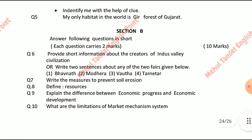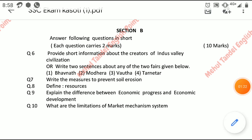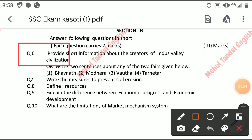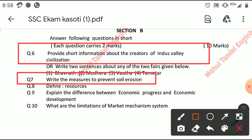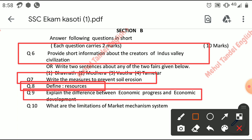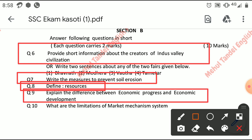Provide short information about the creators of Indus Valley Civilization. Or write two sentences about any two fairs given below: Bhavnath, Madara, Vautha, or Tarnetar. Write measures to prevent soil erosion. Define resources. Explain the difference between economic progress and economic development. What are the limitations of the market mechanism system?